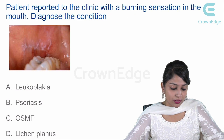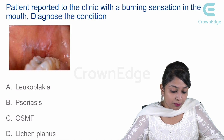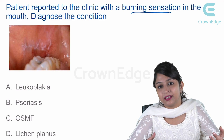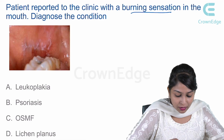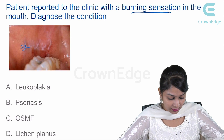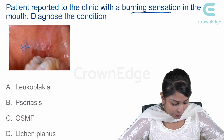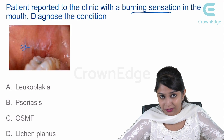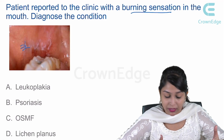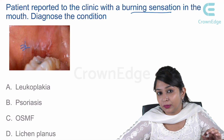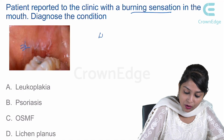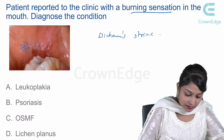A patient reported with a burning sensation in the mouth — diagnose the condition. Looking at the image, we see radiating lacy white lines. In leukoplakia we see thick white patches; psoriasis shows peeling and erythema; OSMF shows keratotic bands. Lichen planus presents with these white lacy papules, most commonly called Wickham's striae. The right answer is option D, lichen planus.